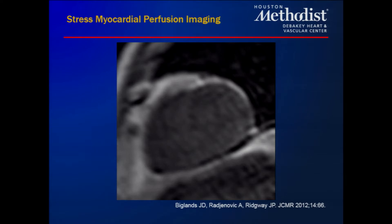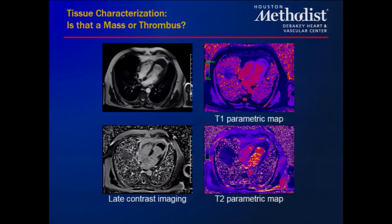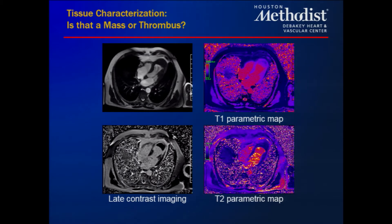Cardiac MRI is not limited to late gadolinium enhancement. We can also do perfusion alongside nuclear stress testing, with the additional advantage of seeing the thickness and extent of ischemia. We inject a bolus of contrast and follow its transition through the chambers and myocardium. In one example, a defect consistent with LAD ischemia was seen, with the anterior wall and septal wall hypoperfused relative to other walls.